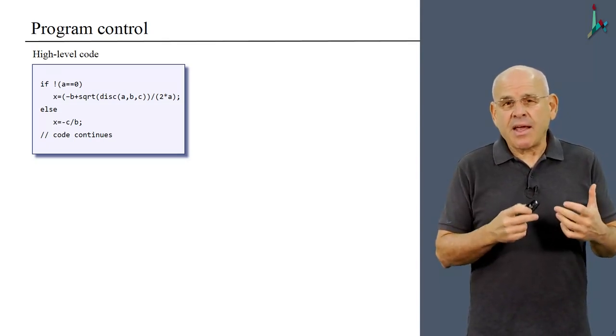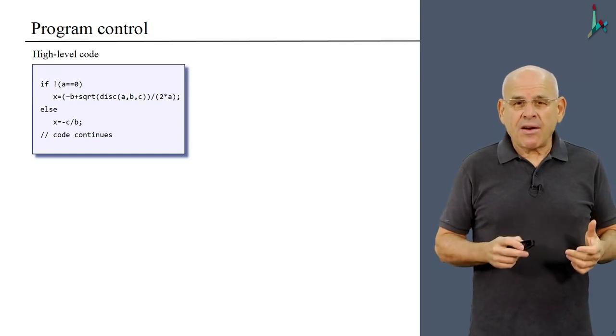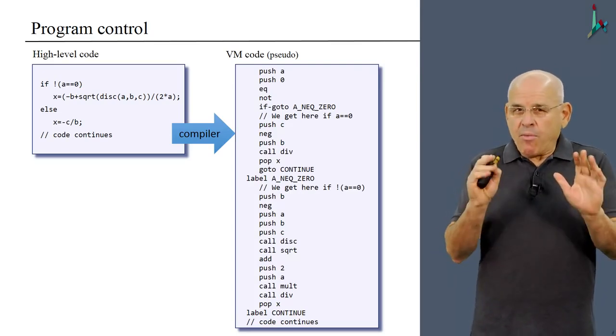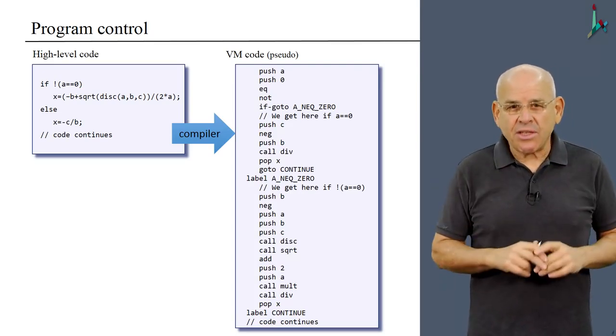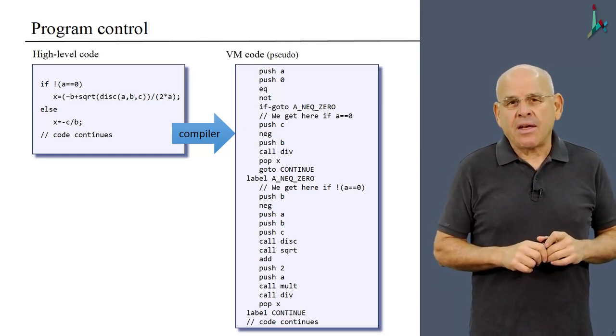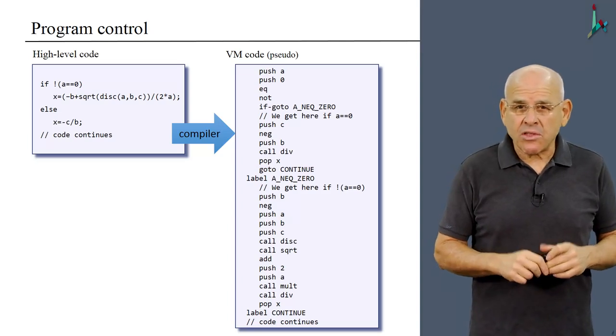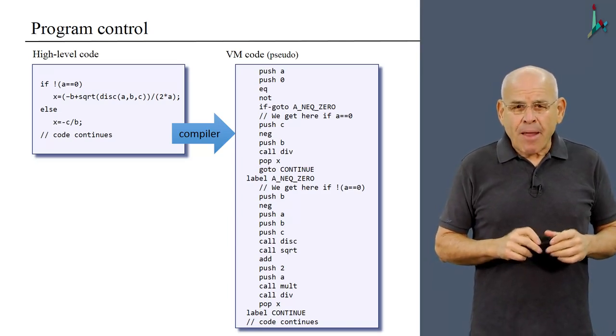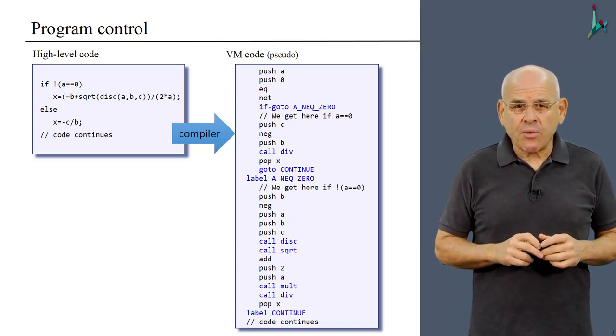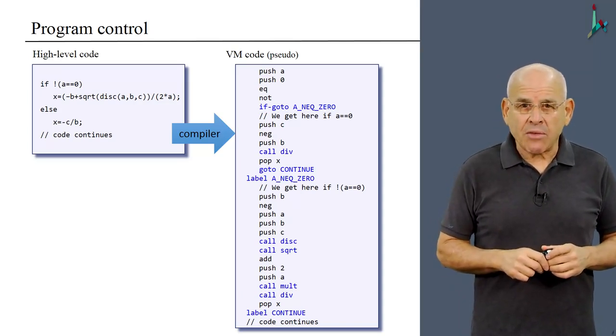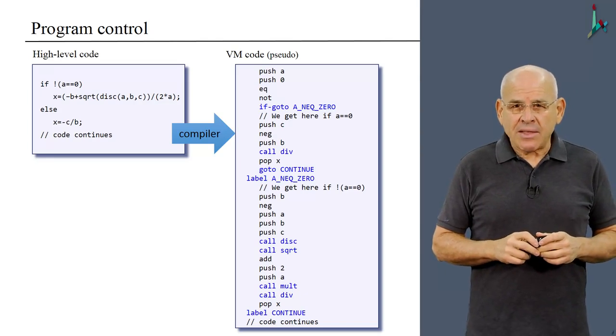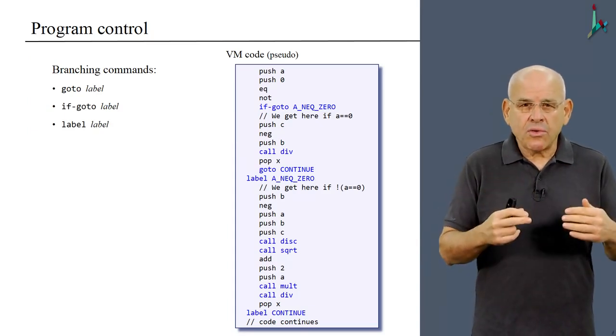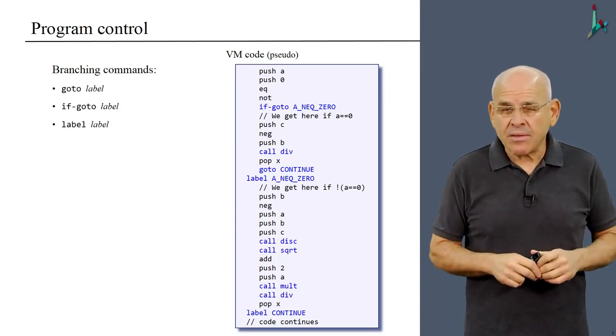The logic here is not really important. And if I write this and I give it to a compiler, well, the compiler will generate this pseudo VM code. How the compiler achieves this magic is something that will be dealt with in modules four and five of the course. So you don't have to worry about it right now. You don't have to understand how this transformation took place. But if you look at the code that was generated, you will realize that we have a whole set of new commands that we haven't seen before. And these commands boil down to branching commands, which are go to, if go to, and label, three branching commands.